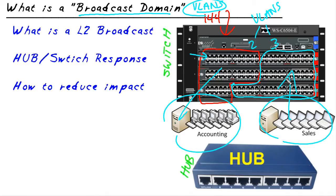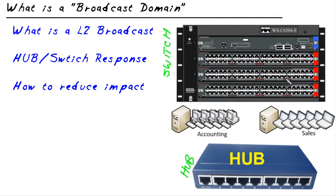So in this micronugget, we've identified what a broadcast domain is. A broadcast domain at layer 2 is how far a broadcast will go when put into a port on the network. On the hub, it goes to every other active port by default. On a switch, it also goes to every other active port by default, because a broadcast could be news for virtually anybody and needs to be propagated. So the response is the same. How do we reduce the impact? The answer is you create smaller broadcast domains.